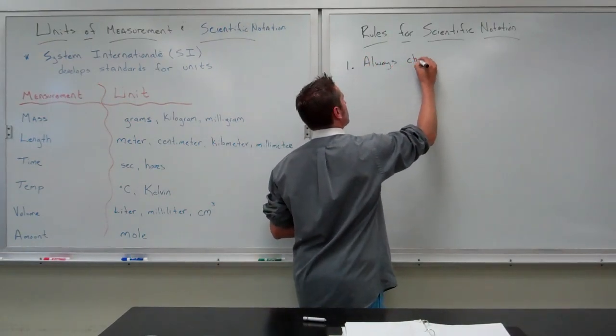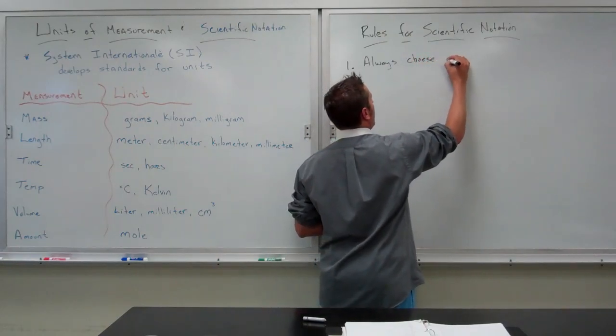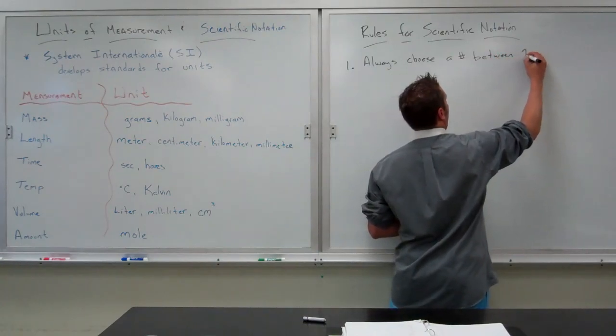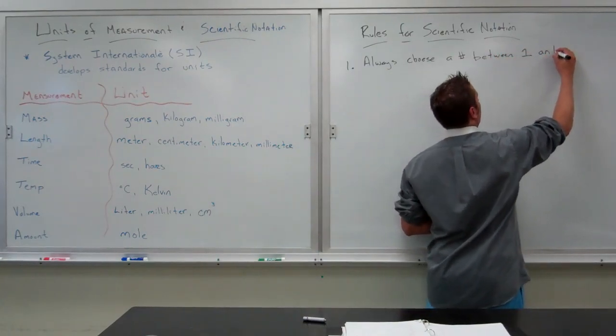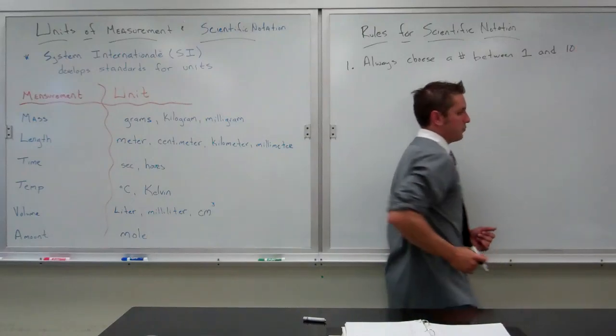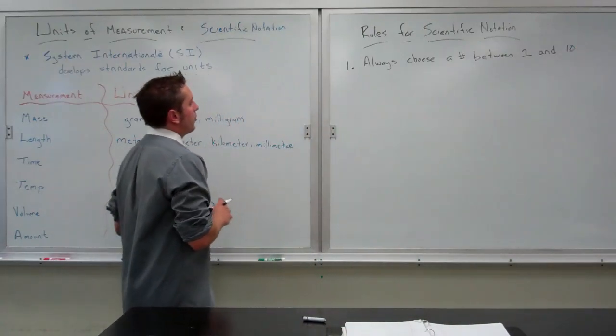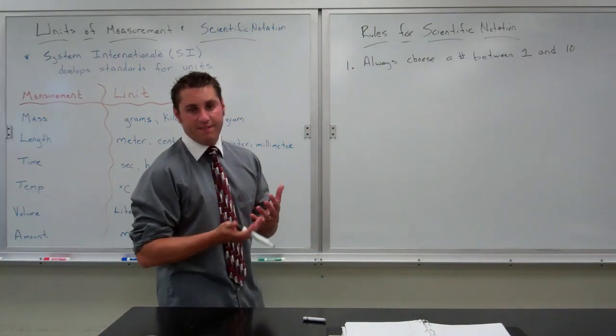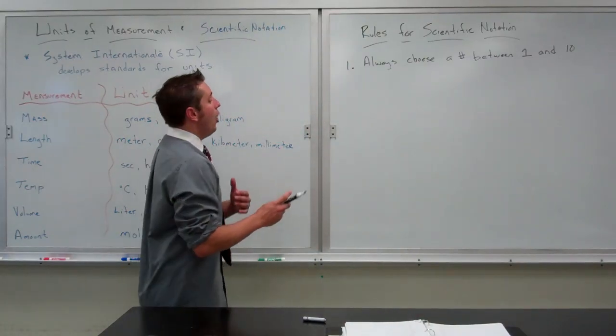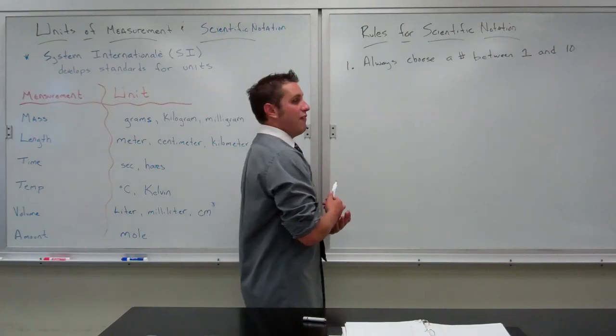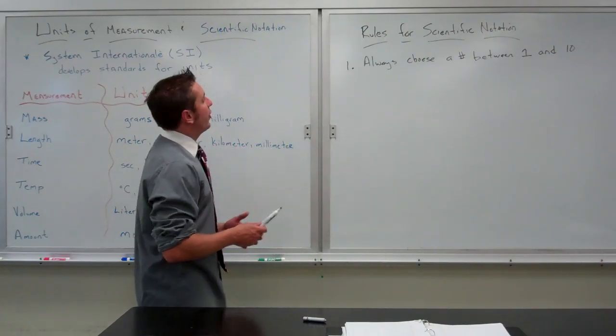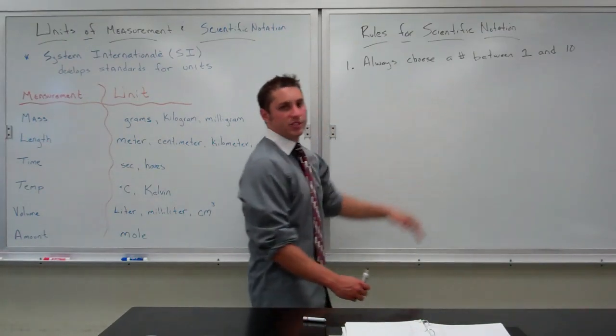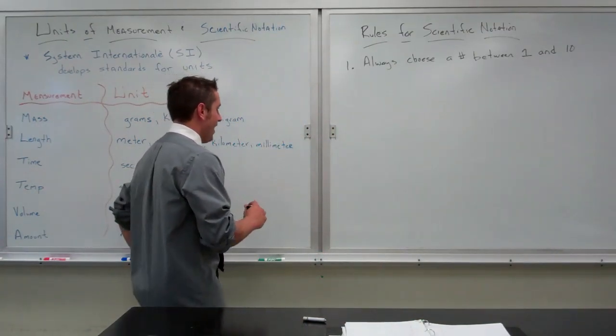Choose a number between 1 and 10. You will never see something written as 17.5 times 10 to the 5th, or 11.7 times 10 to the 3rd. The number will always be something between 1 and 10, whenever we do scientific notation in the class.